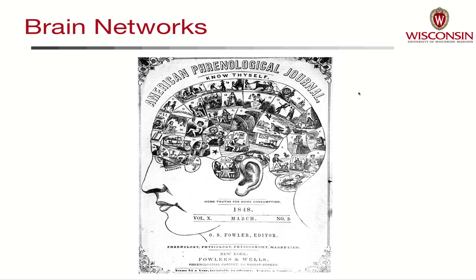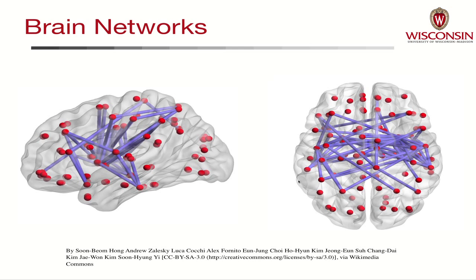Brain networks have an interesting origin because way back in the day it was assumed that specific cognitive tasks or functions resided in localized regions of the brain. For example, we might say that agreeableness resided in this part of the brain, memory resided in this part of the brain, and love resided back here in the lower part of the brain. The advent of imaging technology in recent years has proved this not to be true. It turns out that while different parts of the brain are specialized for particular functions, in order to accomplish most tasks we're going to have to engage an entire network of brain regions.